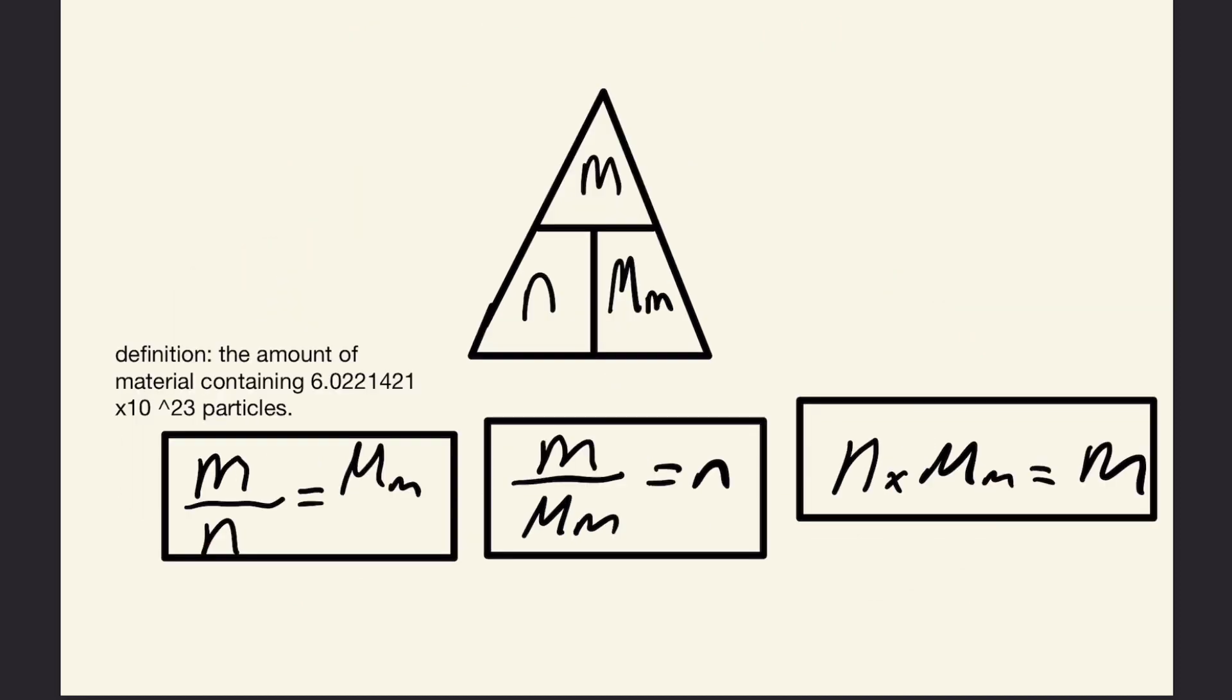The first triangle relates mass, moles, and molar mass to each other. Mass is on top with units generally in grams. Moles and molar mass are on the bottom of the triangle. Molar mass is in units of grams per mole.